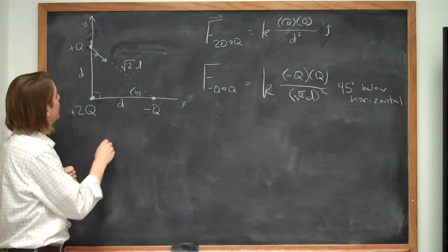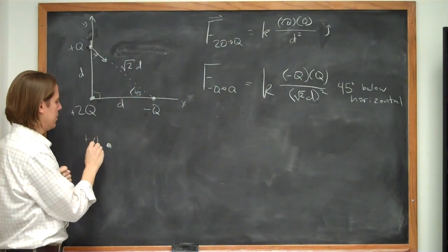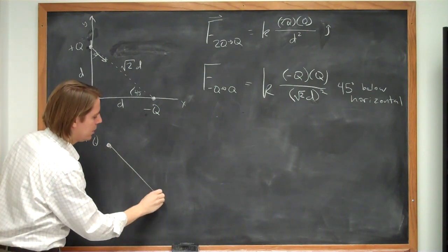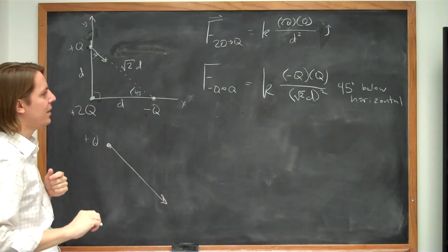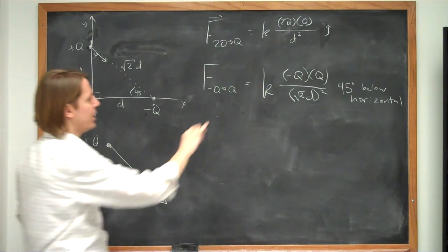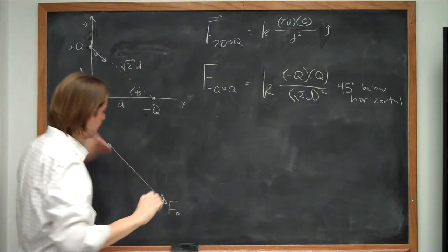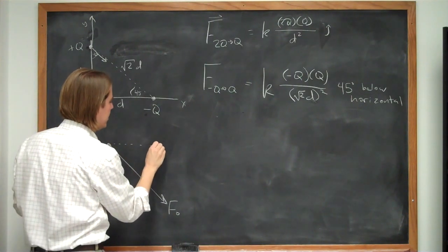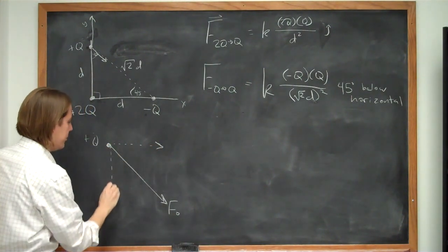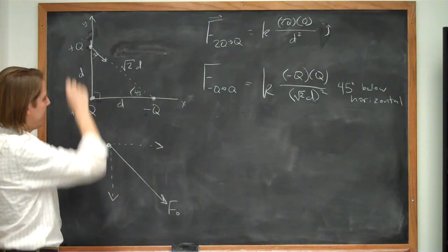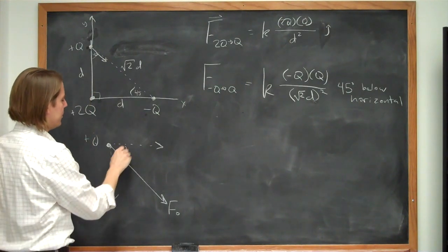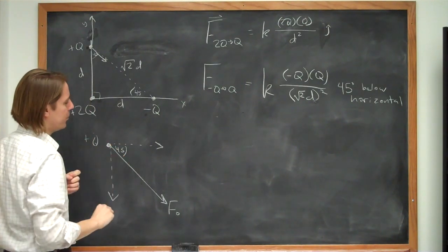So we just have to break that in components. So if we know, sort of zoom in on it and say, here's the plus q charge. If the net force is like that, and we can say, what is it? Let's just call it f naught. So if that's the force, then we know it has a component this way and it has a component this way along the axes like we want.